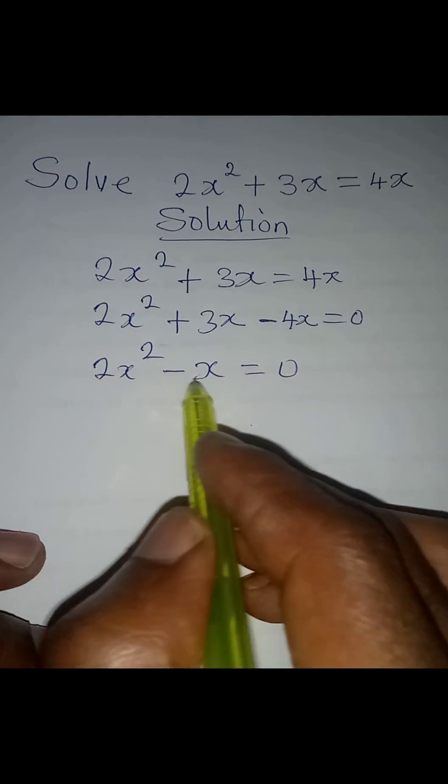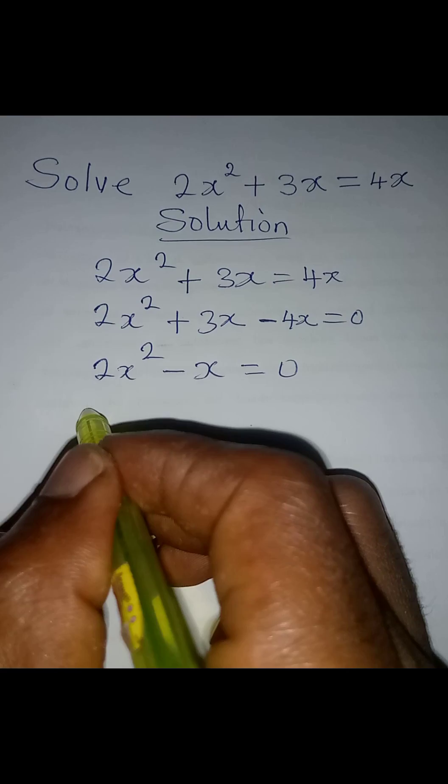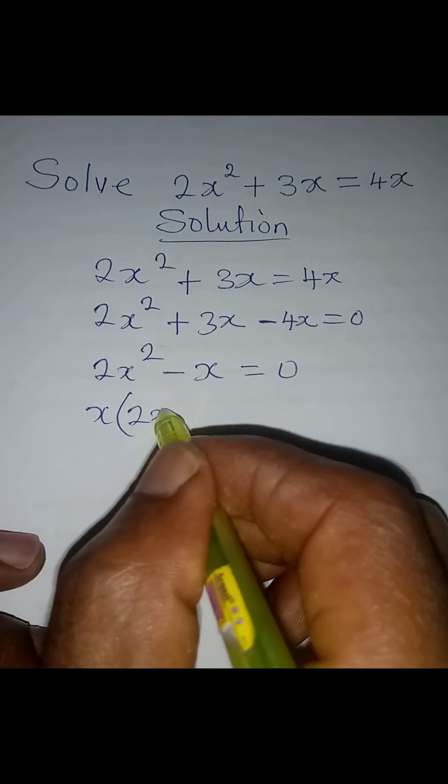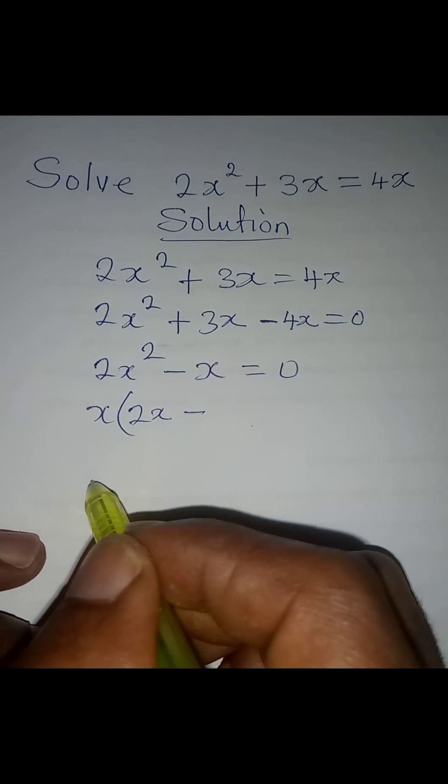Now x is common to these two terms. I will factor out x here. We have x(2x - 1) = 0.